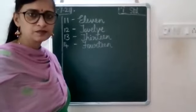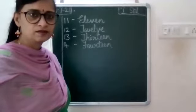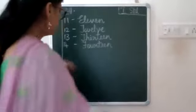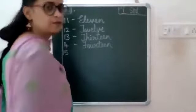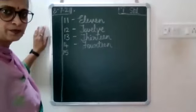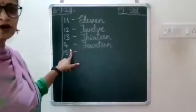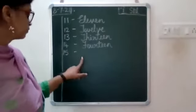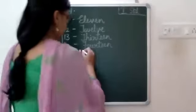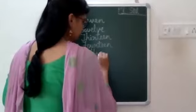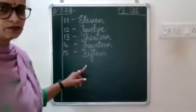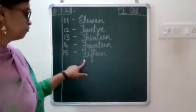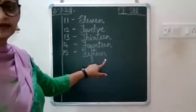All of you will have written till 14. Now again leave a line, write 15. Leave one finger space, put a small dash, leave a finger space, then again leave a finger space, write capital F-I-F-T-E-E-N, 15.